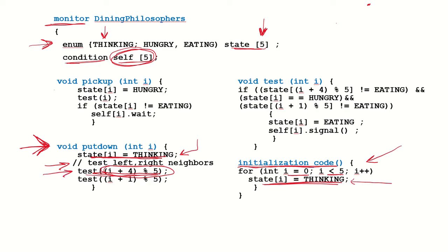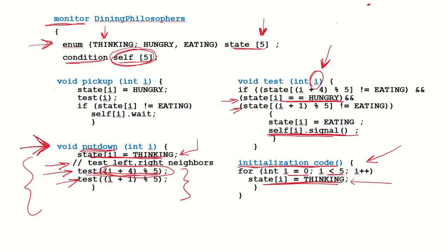When the right neighbor (i + 4) mod 5 is tested, that philosopher will check whether its own left and right neighbors are eating, and if it is hungry and neighbors are not eating, it will start eating. In this way, when philosopher i puts down its chopsticks it also tests whether the left and right neighbors were hungry, and if they wanted to eat they can be signaled to eat. This is how the dining philosophers problem is solved using monitors, and since each philosopher tests its neighbors before eating it does not result in a deadlock condition.